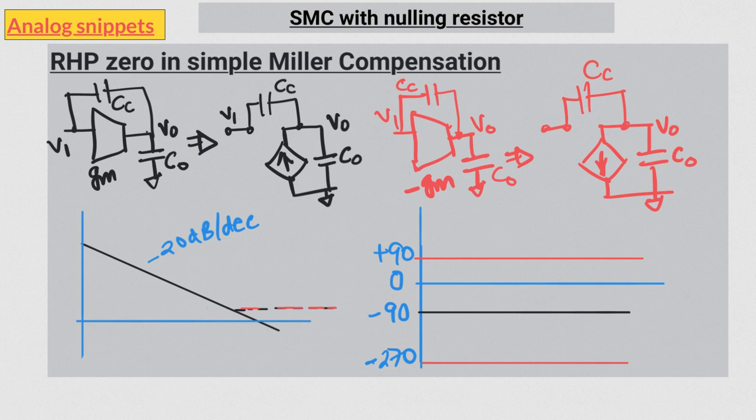How about phase? At high frequencies, when the behavior is dominated by the capacitor divider, the phase of vout follows the phase of v input, and that means at high frequencies phase becomes zero.